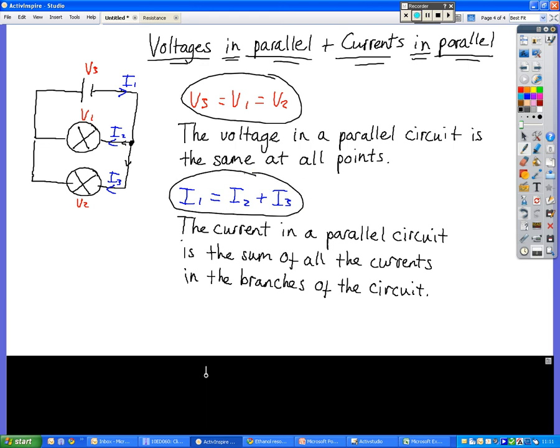So the current in a parallel circuit is the sum of all the currents that are in the branches of the circuit. If we add a third branch there, there would be a certain amount of current here that would go down this way. And if this was I4, then I1 would be equal to I2 plus I3 plus I4, and that happens for however many branches you've got.